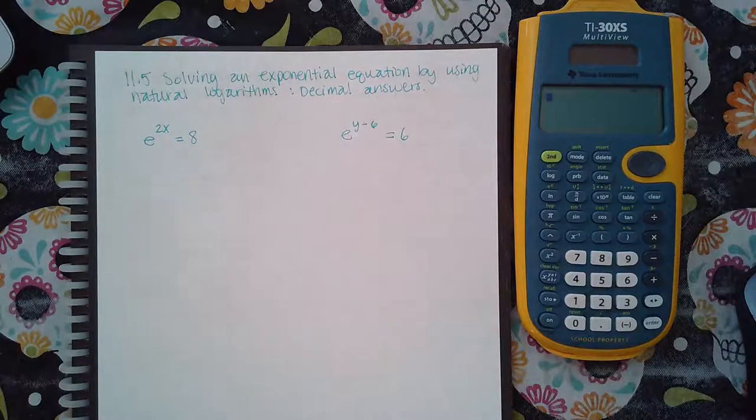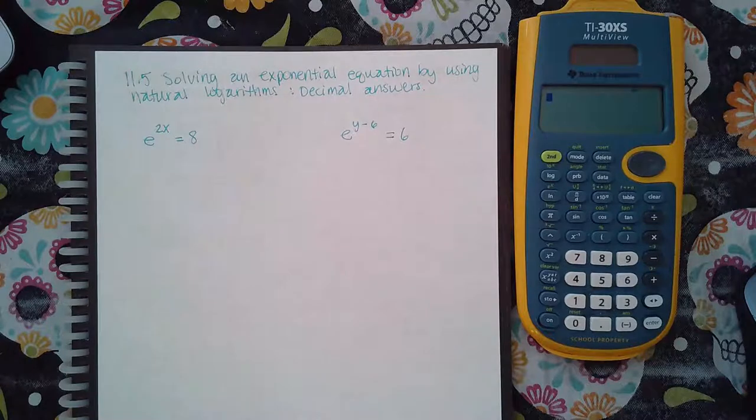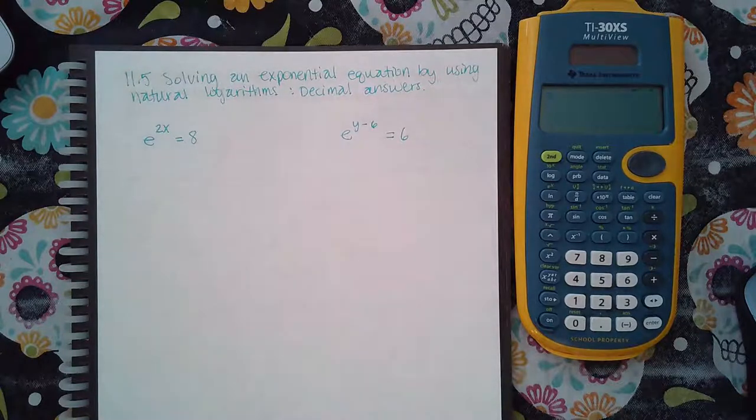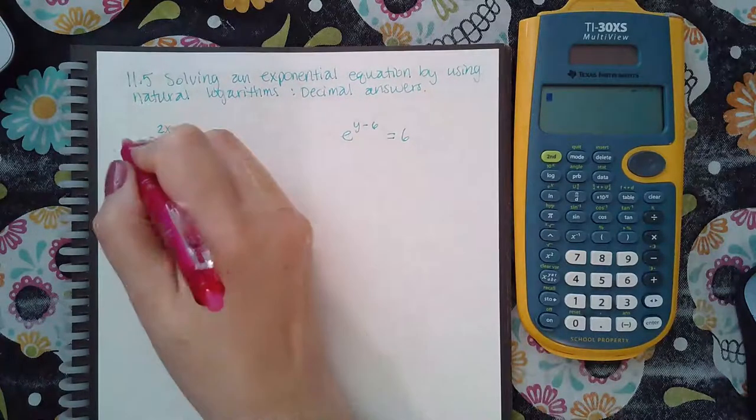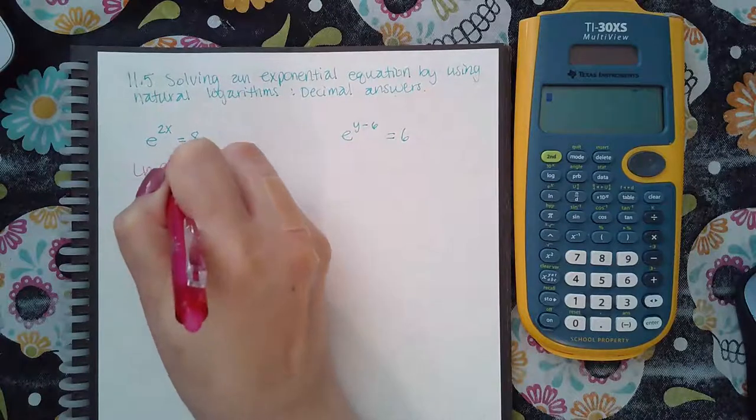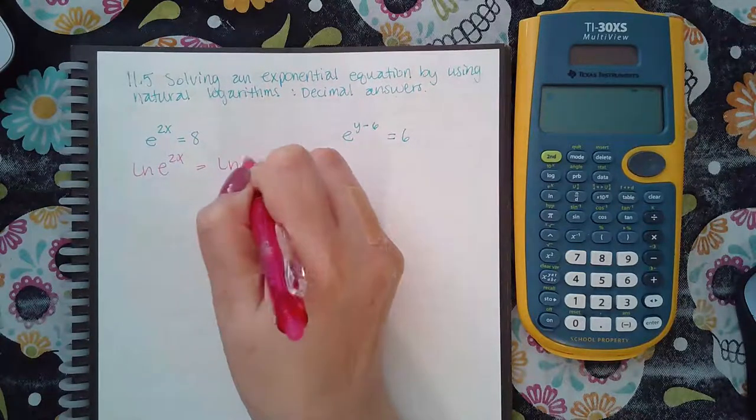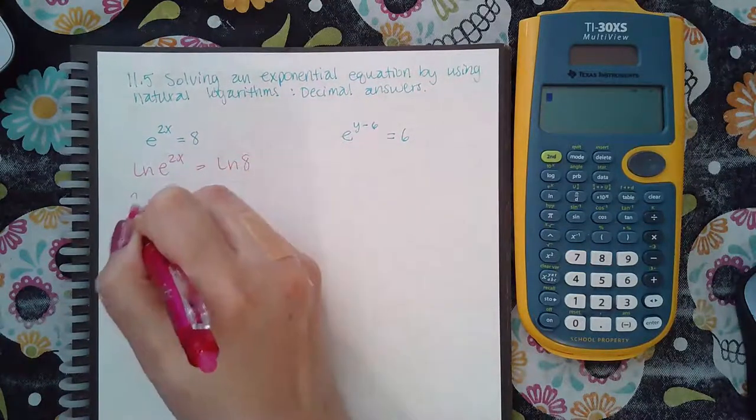Here we have solving an exponential equation by using natural logarithms, and they want decimal answers. Same thing as before, you're going to do ln on both sides, and then bring the exponent to the front.